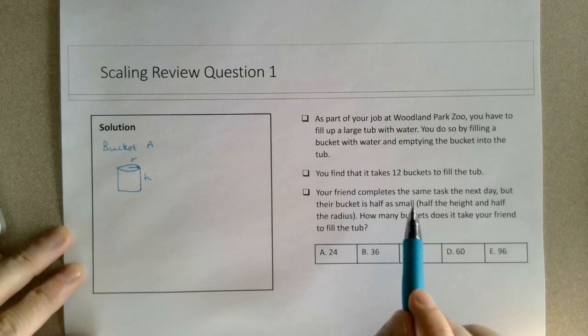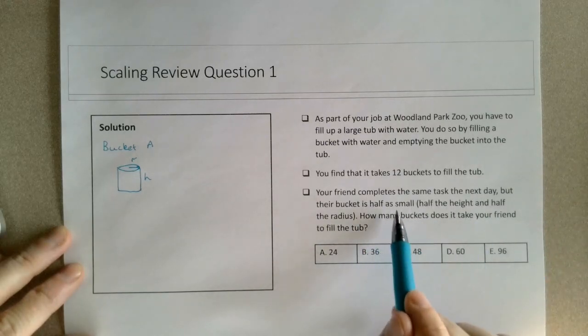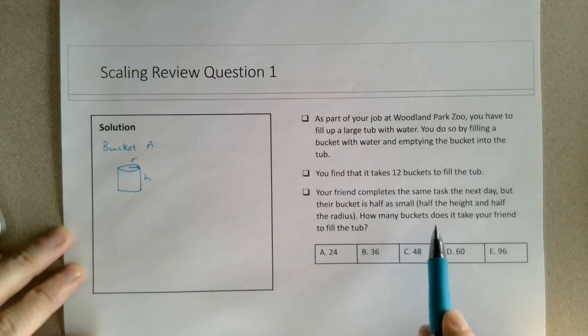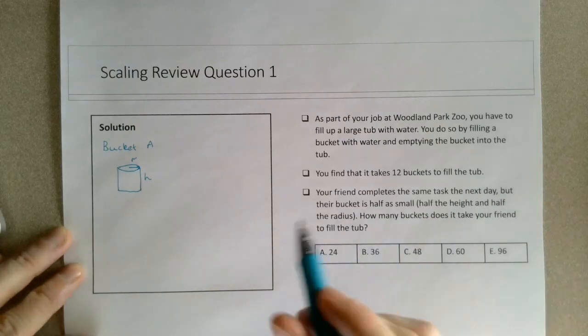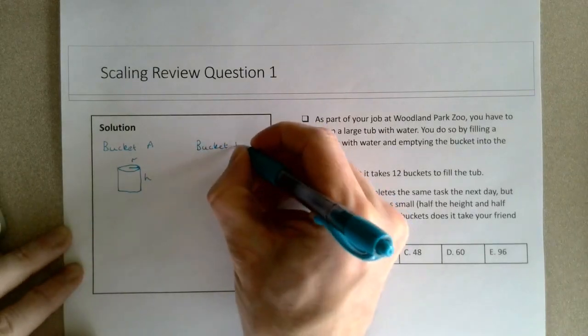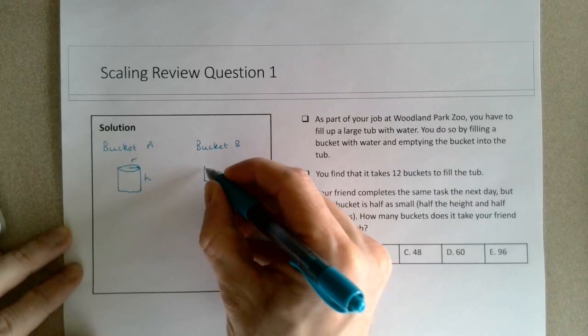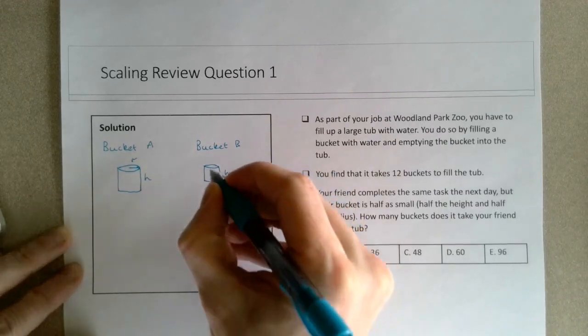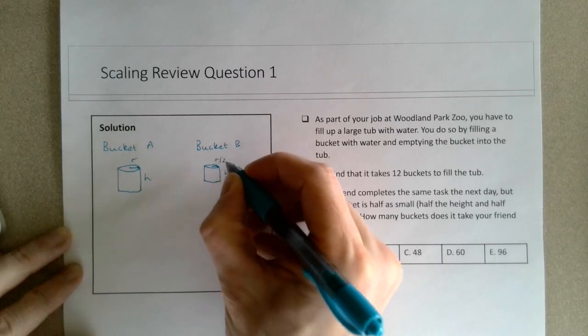And your friend has to complete the same task the next day, but their bucket is only half as small, so half the height and half the radius, and how many of those buckets we need to take to fill the tub. I'll call that bucket B, so it's a smaller bucket, so it only has a h over 2, and a radius of r over 2.